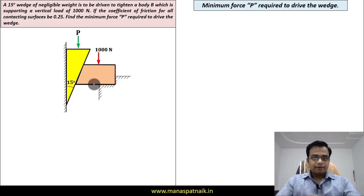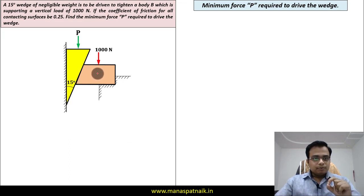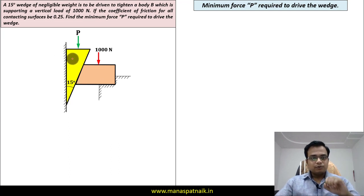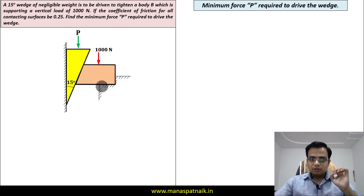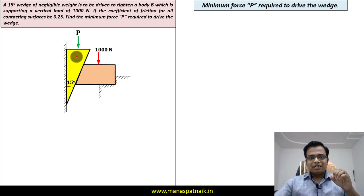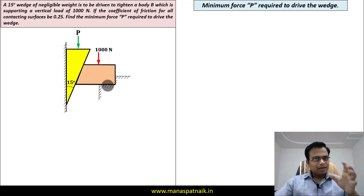There are essentially two blocks — one is this 1000 Newton block which has to be tightened. This is done with the help of a wedge. We are pushing this wedge in the downward direction with force P, and this is the force we need to find. When this wedge is driven downward, the 1000 Newton block will push towards the vertical surface.